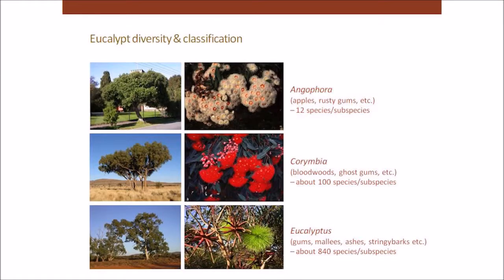A quick slide about eucalypt classification. When I talk about eucalypts, I'm talking about three genera of plants — not just eucalyptus. I'm also talking about Corymbia, which has about 100 species, and Angophora, which has about 12 species. National Eucalypt Day actually covers all three genera. Collectively, these three genera are all known as eucalypts.